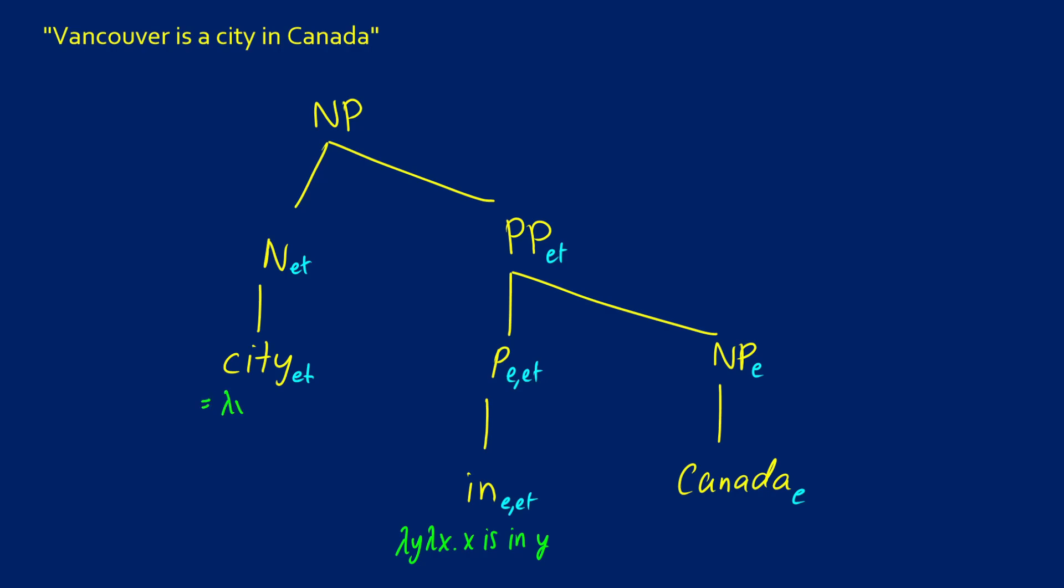So city will be lambda x dot x is a city. Canada will just say that's C. So when we join these two together at the prepositional phrase, what's going to happen is C is going to replace all of our y's. So we're going to be left with lambda x dot x is in C.